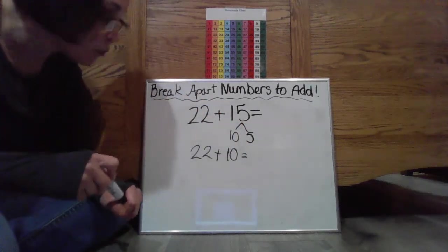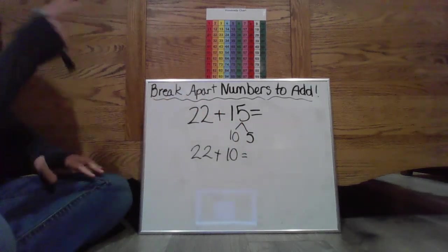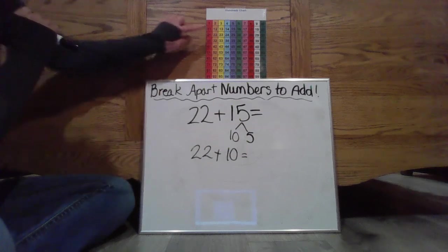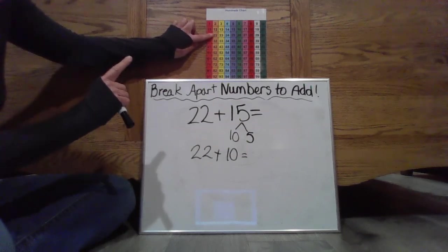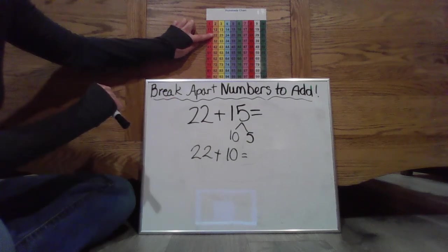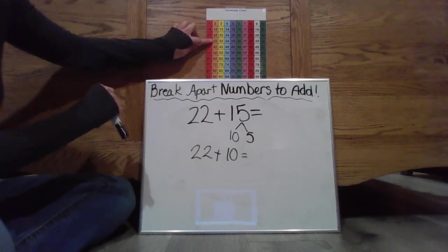So now I'm going to take my 22 plus that 10. So 22 plus 10 more. Hey I'll take a look at my hundreds chart. That could be a helper. I'm at 22. I want to go one ten. That means only one hop down. There it is. Now I'm at 32.